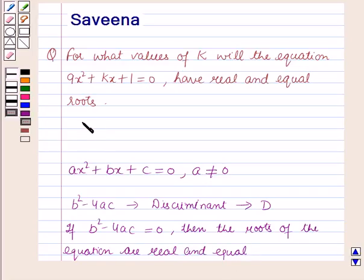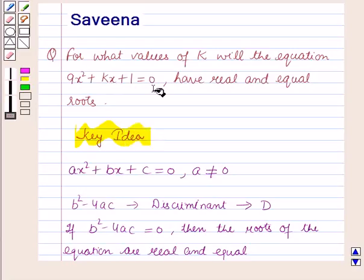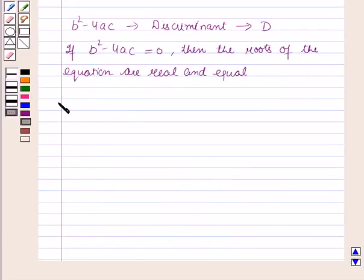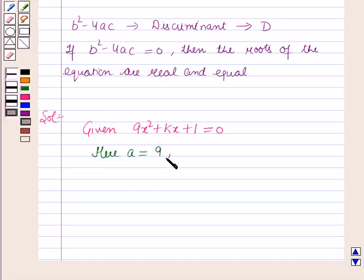This result will work out as a key idea for solving this question. Now we will start with the solution. The equation is given as 9x square plus kx plus 1 equals 0. Comparing this equation with the standard form, here a equals 9, b equals k, and c equals 1.